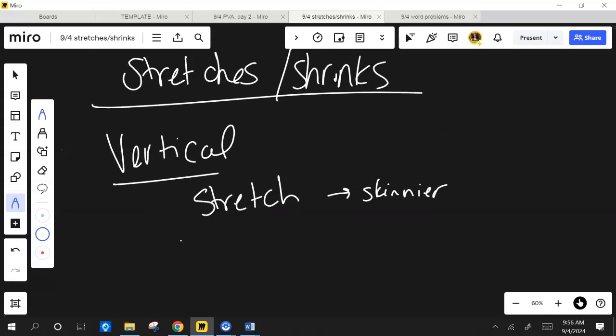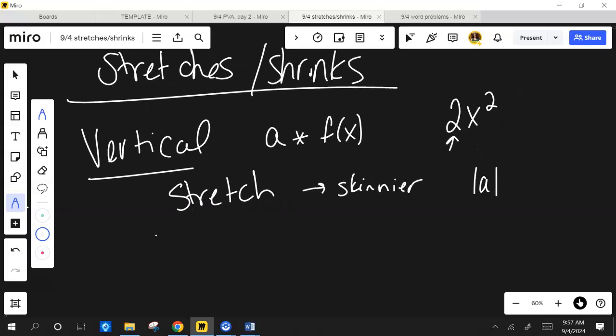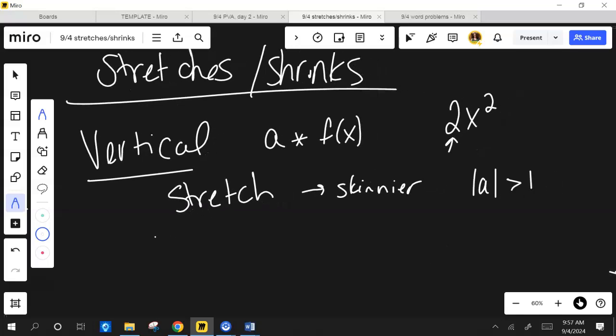Alright, so the vertical stretch or shrink, whatever, there's some value that sits out front of my function. Some number that sits out there. Maybe I have, if I'm talking about a quadratic, maybe it's 2x squared. This 2 is that a that's sitting out front, okay?